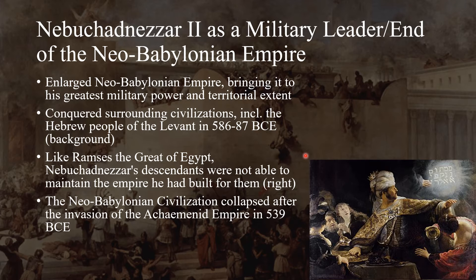The Neo-Babylonian civilization collapsed after the invasion of the Achaemenid Empire in 539 BCE. The destruction of the Neo-Babylonian civilization is attested in the Hebrew Bible, but it's also discussed by the Greek historian Herodotus as well.